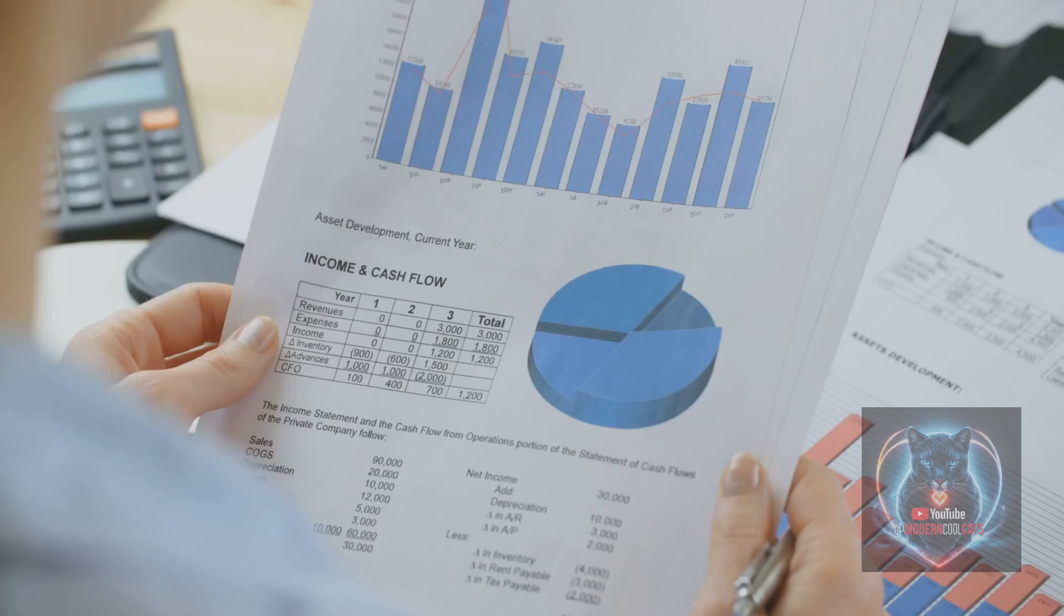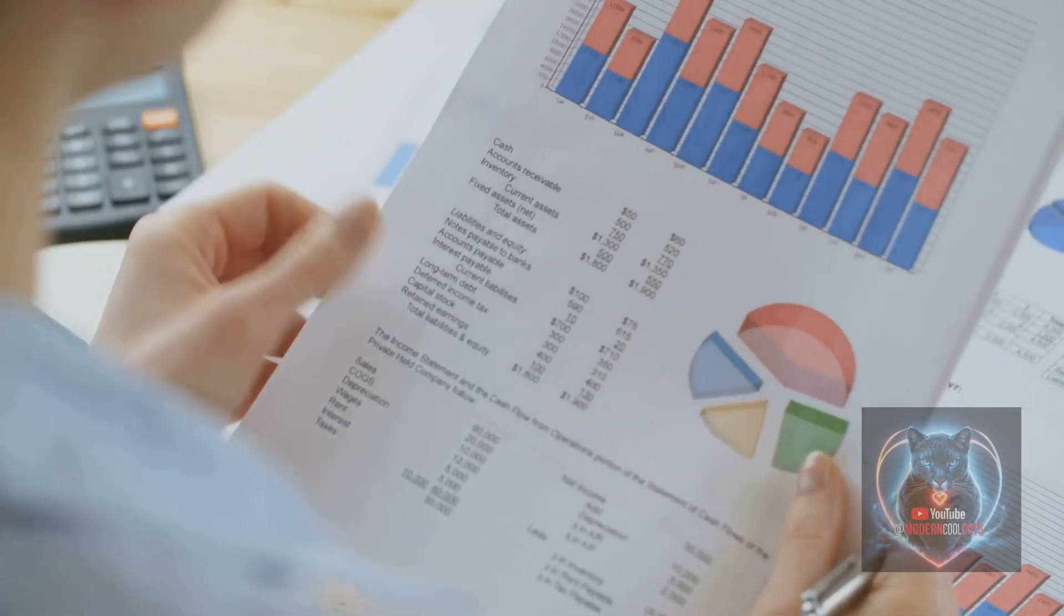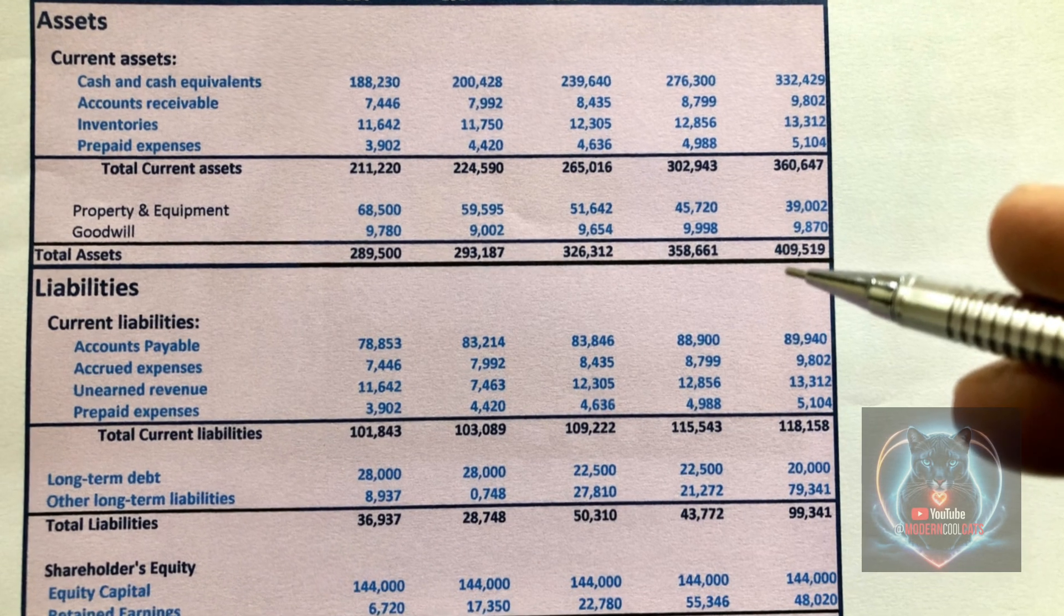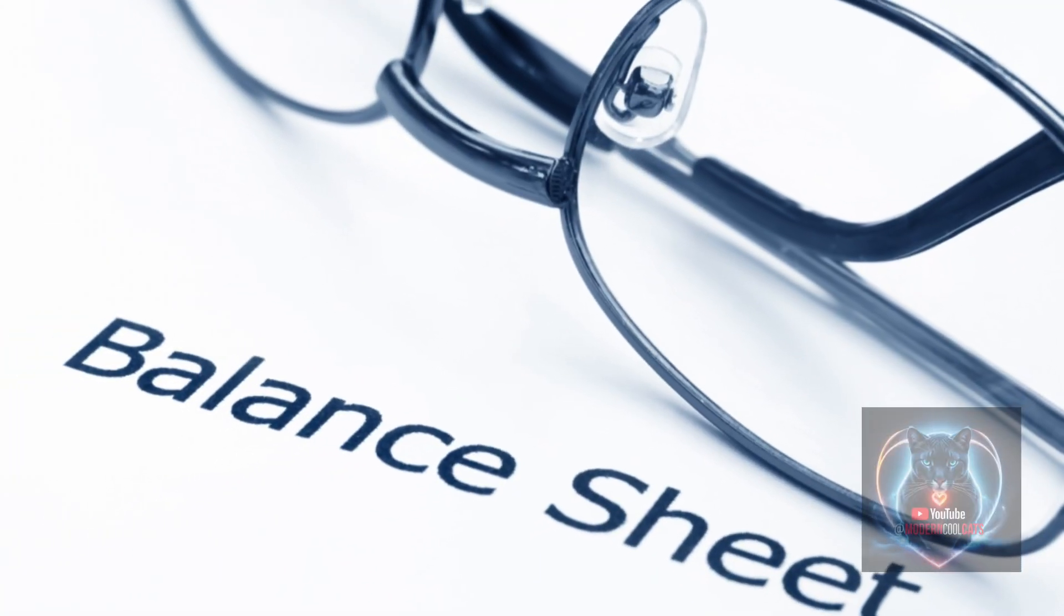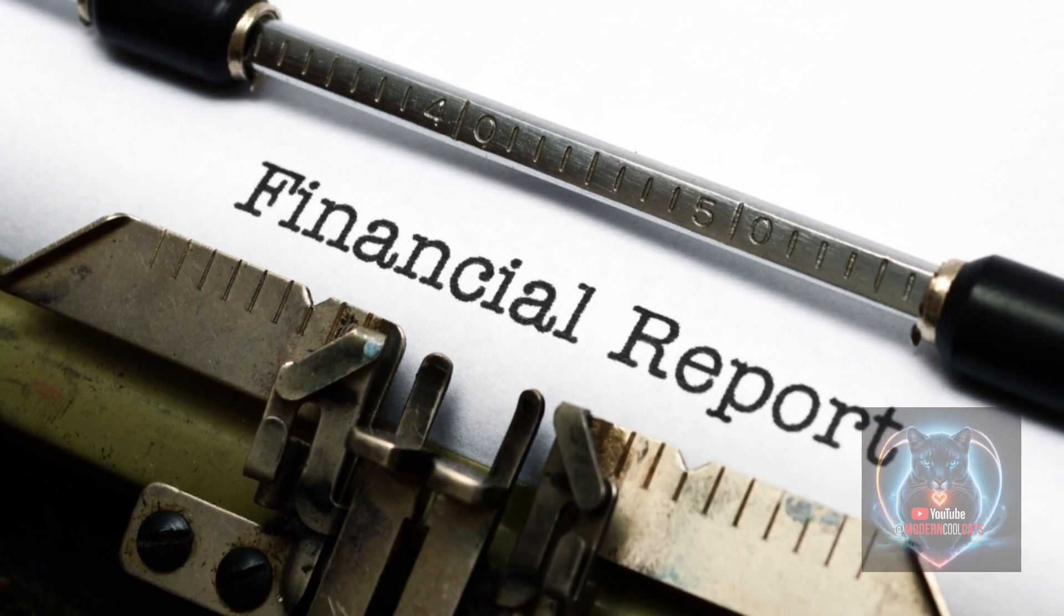The FRY9C report is divided into several key schedules, each providing detailed insights into different aspects of a company's financial condition and performance. These schedules include the balance sheet, which lists the company's assets, liabilities, and equity, the income statement detailing revenues, expenses, and net income.